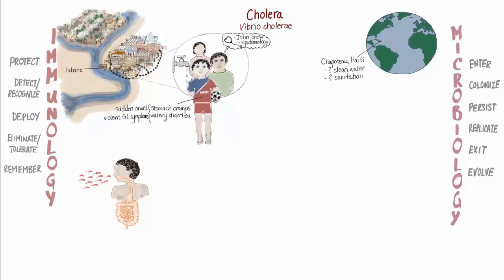Jan knew that his next steps would be critical to his brother's survival. Several cholera treatment centers had been opened in Haiti since the disease was first introduced into the area, likely by UN peacekeepers who came from Nepal. But the nearest cholera treatment center would have required a two-hour trek, including a river crossing, and Jan knew that infection with Vibrio cholerae could cause rapid dehydration and death in a matter of 12 hours if left untreated.